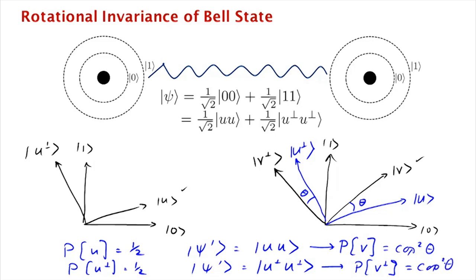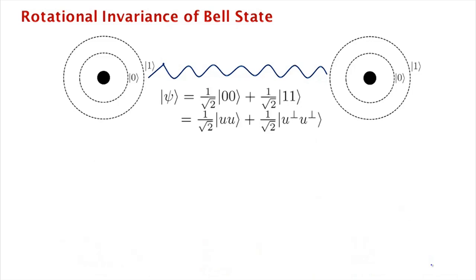So here's the new principle that we've derived. What we've derived is that if we measure the two qubits in two different bases which make an angle theta with each other, the probability that we get corresponding outcomes on the two measurements is exactly cosine squared theta. And so the probability that we get not matching outcomes, so we get u and v perp or u perp and v, is sine squared theta.